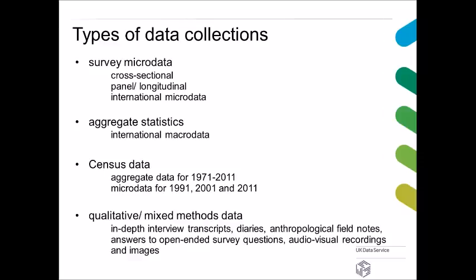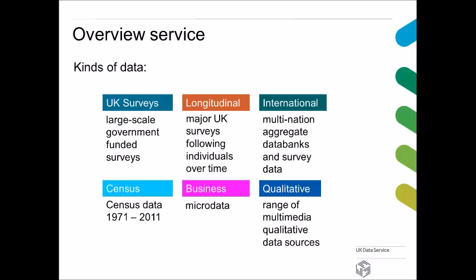The types of data collections we hold are survey microdata, aggregate statistics, census data, and qualitative and mixed methods data. The kinds of data we hold include large-scale government-funded UK surveys, longitudinal surveys following individuals over time, international macro and micro data, census data, business data, and qualitative and mixed methods data. Today I am focusing on longitudinal data.